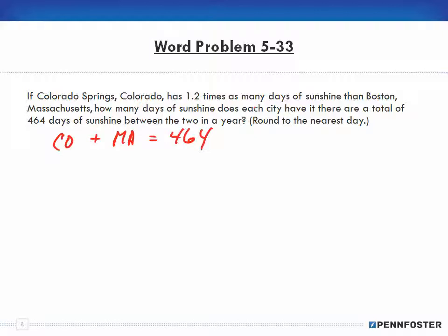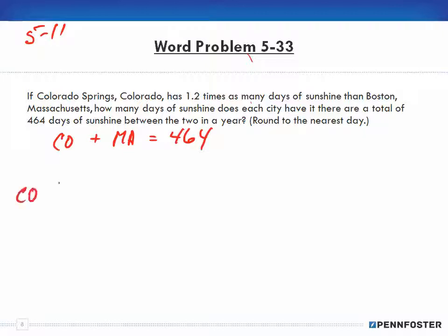The way this problem is worded can be a little confusing. However, it's basically the same as problem 5-11 — it's just worded very differently. As they're working through the problem, it's giving you the relationship by saying Colorado is 1.2 times Boston.